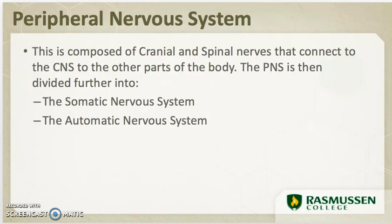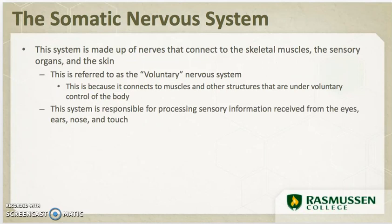Your peripheral nervous system is composed of cranial and spinal nerves that connect to your central nervous system and acts as other parts of the body. It is further broken down into two other systems: the somatic and the autonomic nervous system. Your somatic nervous system is made up of nerves that connect to skeletal muscles, sensory organs, and the skin.